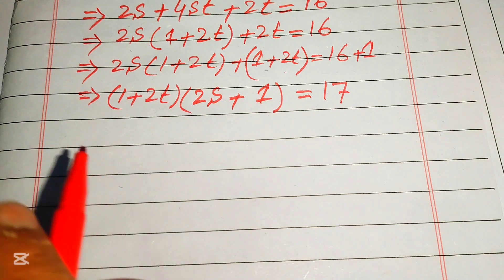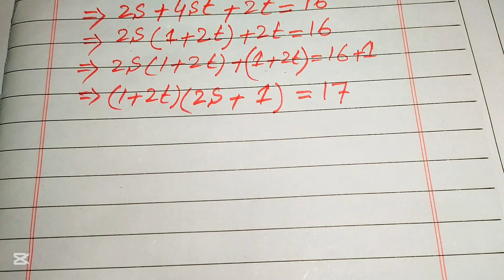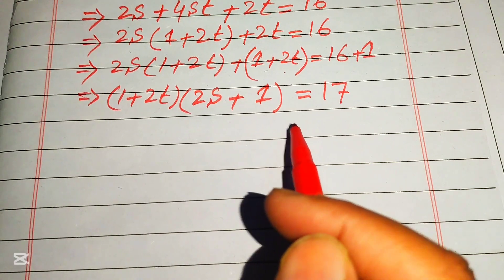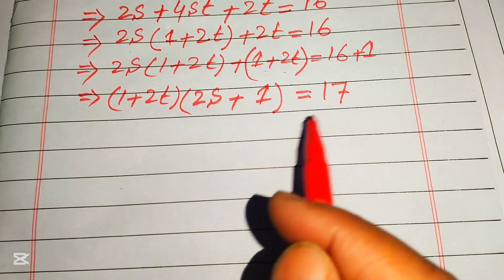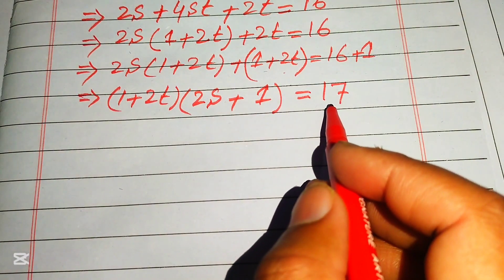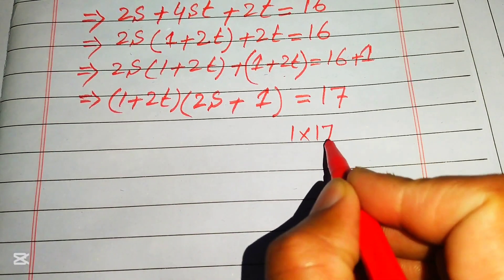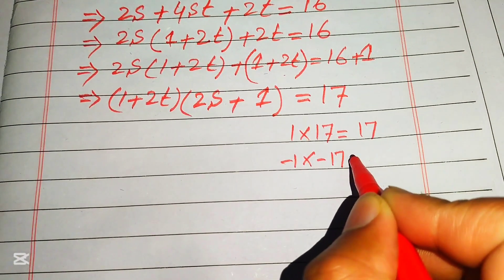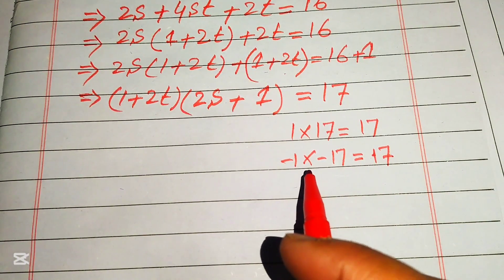On the left we have a product of two factors, but the right side is a single number. We need to express 17 as a product of two numbers. The two possibilities are: 1 times 17 equals 17, and (minus 1) times (minus 17) equals 17.